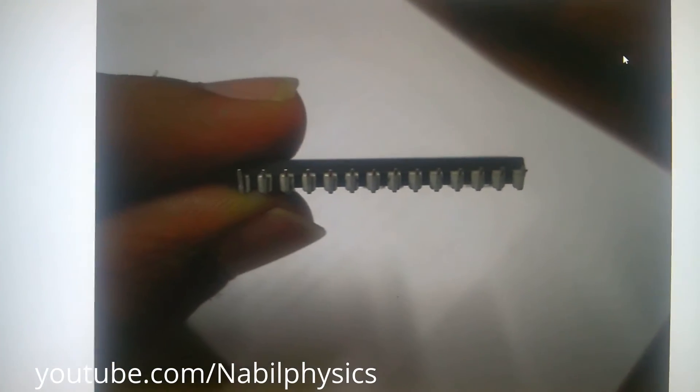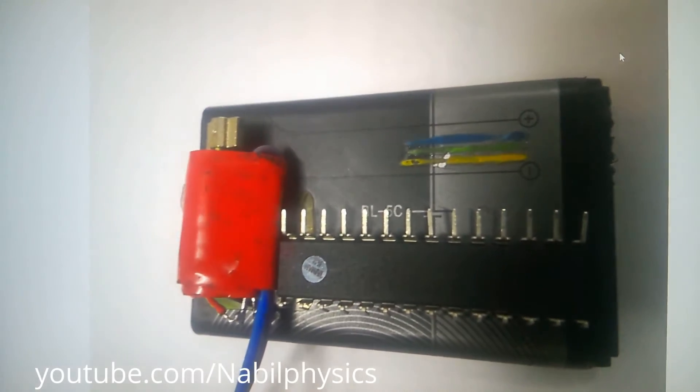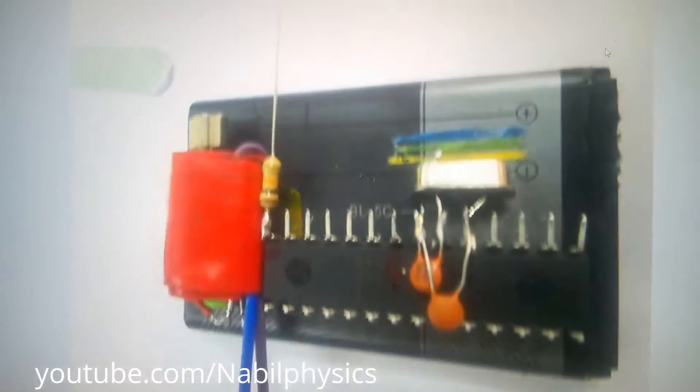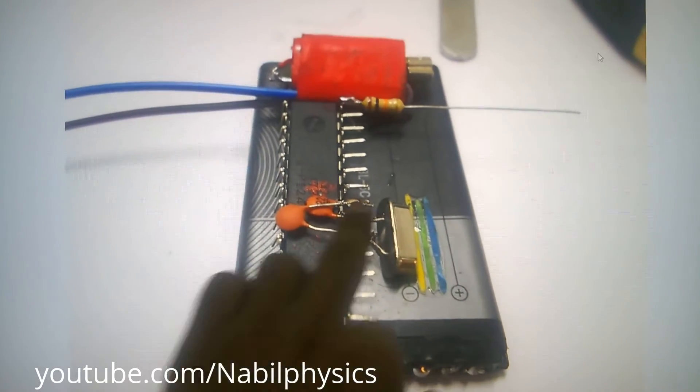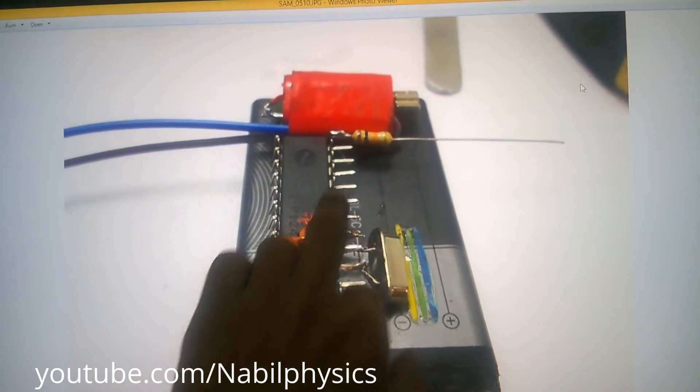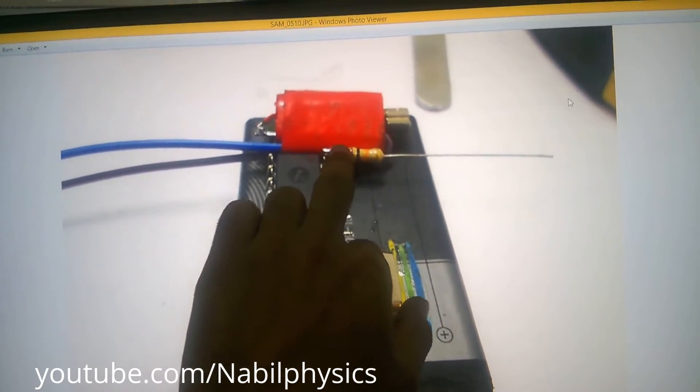This is the side view of the microcontroller. Then, microcontroller is attached with battery and vibrator. This is a crystal, 16 megahertz crystal with 22PF capacitor. This is a 1K resistor.